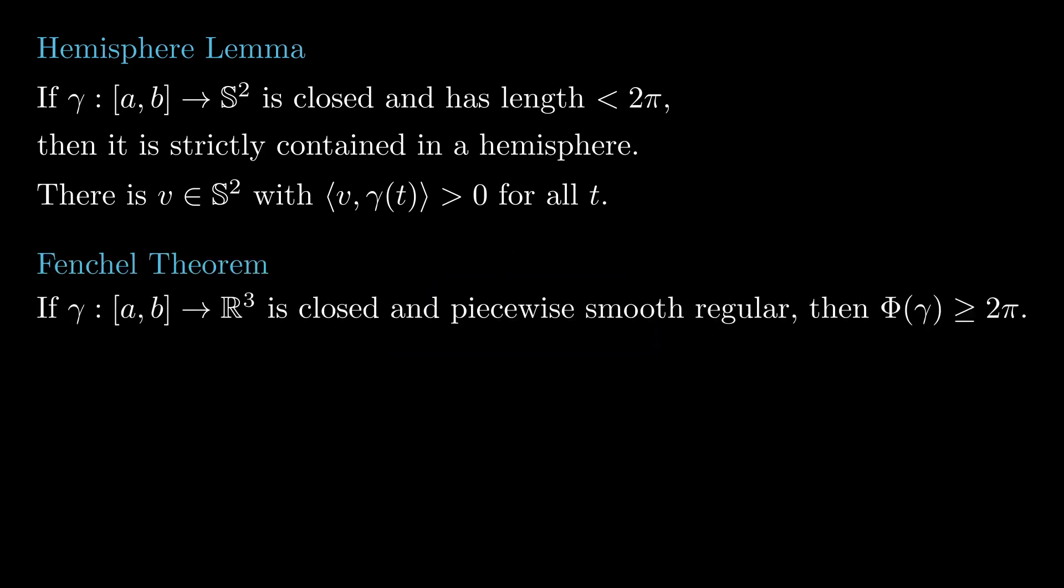As a corollary, we have the following result, called Fenchel theorem. For any closed piecewise smooth regular curve gamma, its total curvature is at least 2π.